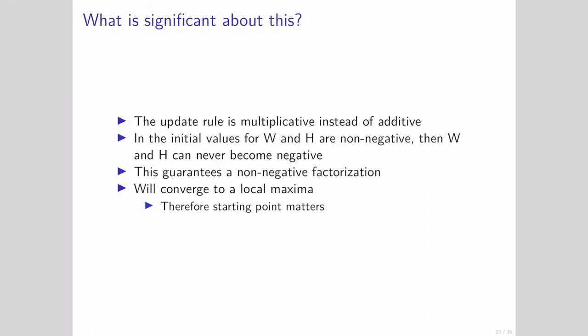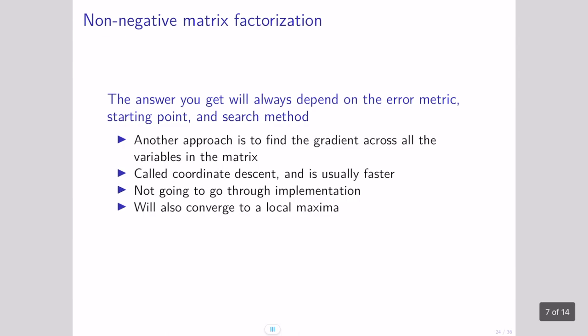So this is really how NNMF works. The update method is multiplicative instead of additive, and this is what leads to forcing it to be non-negative. The initial values of W and H are unknown and can be randomly initialized, but they do need to be non-negative and some sort of positive value — setting them to zero won't work because multiplying zero by anything isn't going to change. This guarantees a non-negative factorization, and it will converge to a local maximum, so the starting point matters. The error metric you use, how you define whether your reconstruction is good or not, is going to matter a lot.